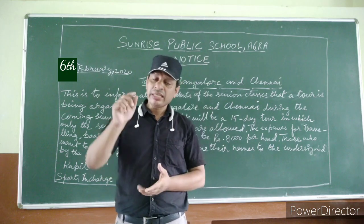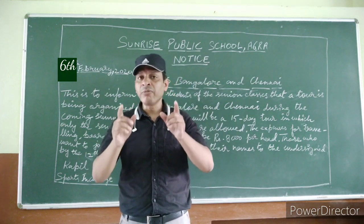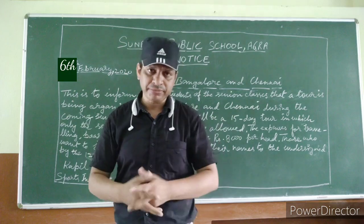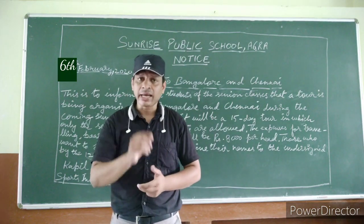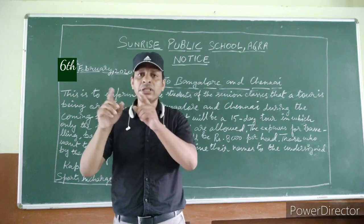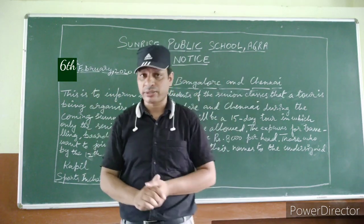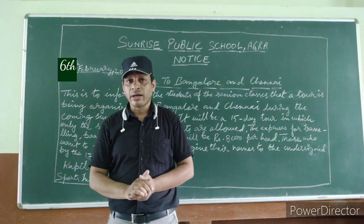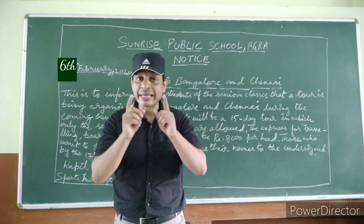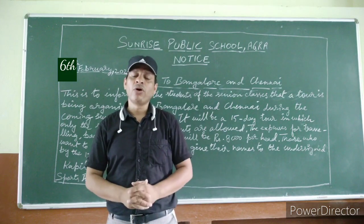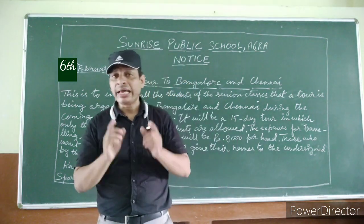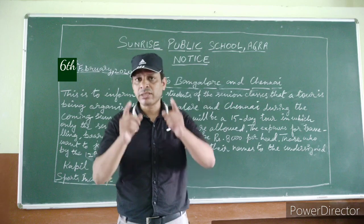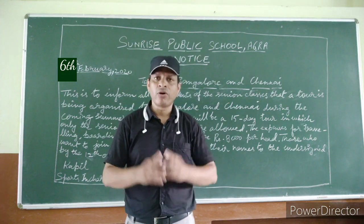Now let's discuss the format of a notice. First of all, on the top inside the box, write the name of the institution or organization that intends to issue the notice, or the name of the issuing authority. Then on the second line, write the word NOTICE in capital letters. On the third line, to the left-hand side, write the date. On the fourth line, write the heading of the notice. Then starts the body of the notice.